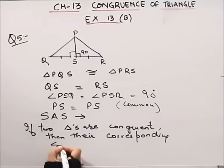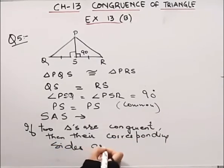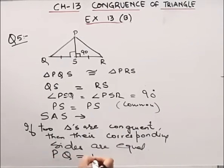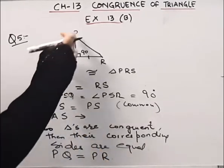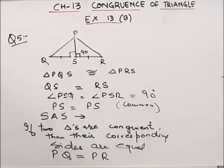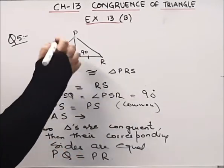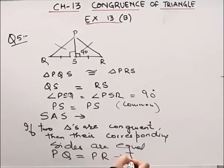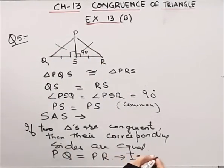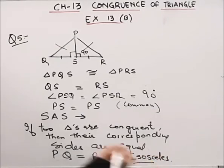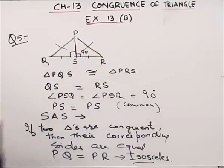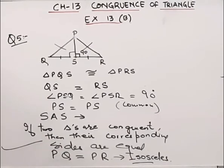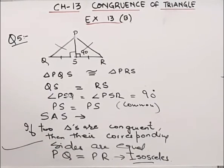Since corresponding sides are equal, PQ is equal to PR. If in a triangle two sides are equal, we call it an isosceles triangle. So we have proved that triangle PQR is an isosceles triangle. Hence proved.